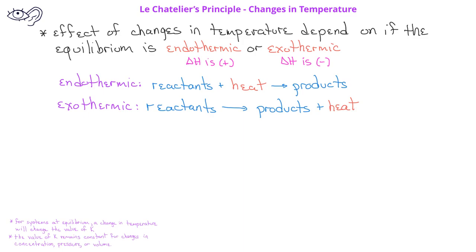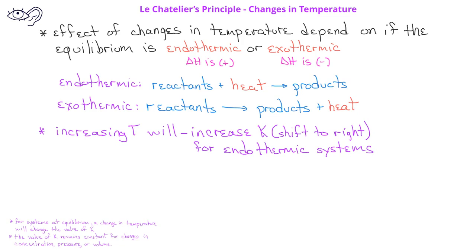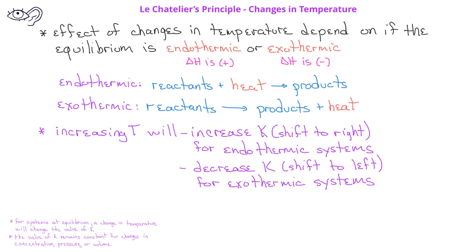Since Le Chatelier's principle says that adding products will shift reactions to the left and adding reactants will shift reactions to the right, we see that increasing the temperature will increase the value of the equilibrium constant for endothermic reactions, and decrease the value of the equilibrium constant for exothermic reactions. Increasing the temperature in an endothermic reaction shifts the reaction toward the products, resulting in a larger equilibrium constant. Increasing the temperature in an exothermic reaction decreases K by shifting the reaction to the left, toward formation of more reactants.